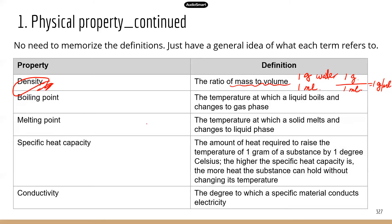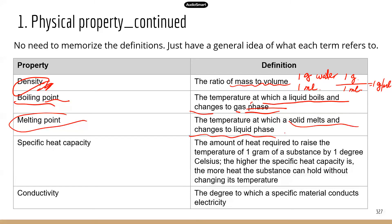Boiling point is the temperature at which a liquid boils and changes to gas phase. You probably see this a lot in daily life — when you boil water, you can see the water vapor, the steam coming up. That's because water reaches the boiling point and the liquid water converts to water vapor. Melting point is the temperature at which a solid melts and changes to liquid phase. You can think of certain metals when they get really hot — they are going to melt.